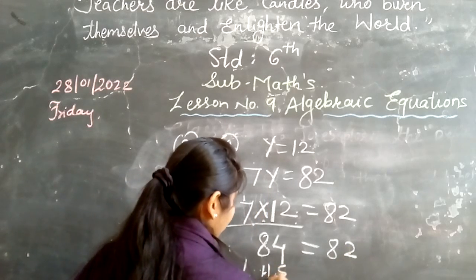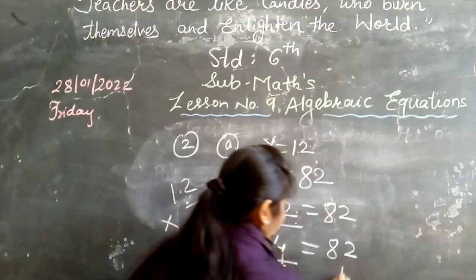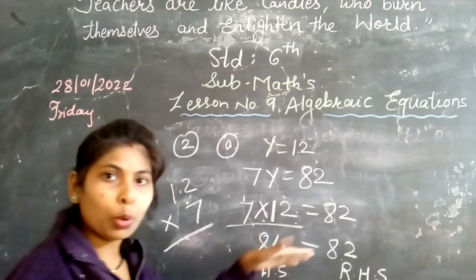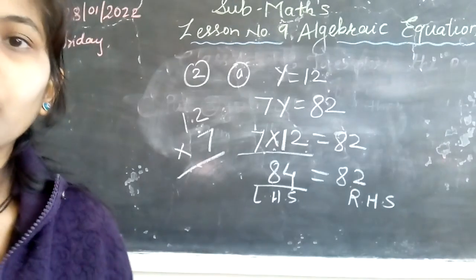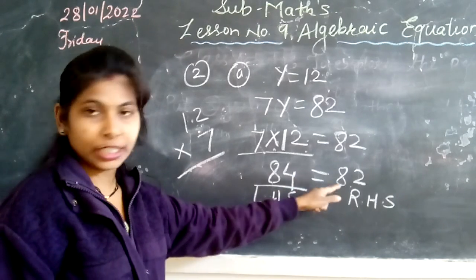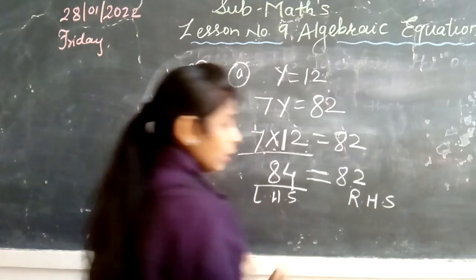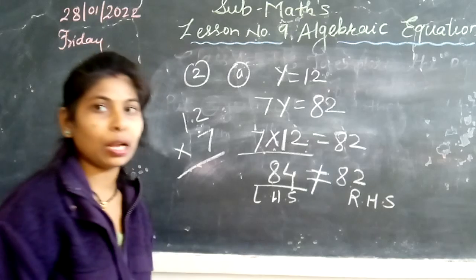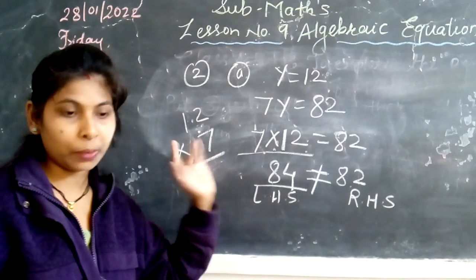Left hand side में कितना आया? 84. और right hand side में कितना है? 82. So दोनों equal हैं क्या? नहीं हैं. दोनों 84 और 82 equal नहीं हैं, तो हम not equal का sign लगाएंगे. So यह हो गया question number 2 में से first problem.